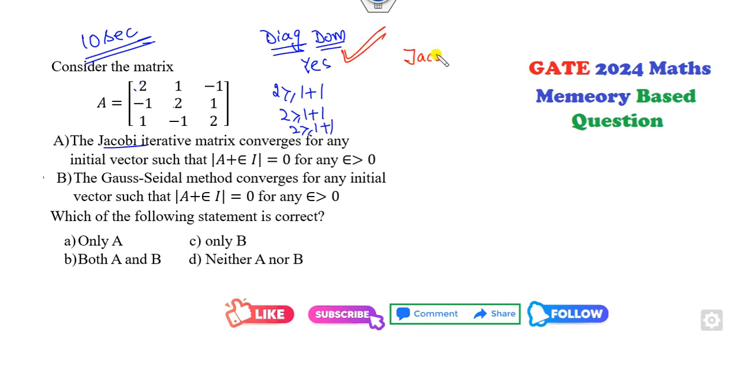Once it is diagonal dominant, then the Jacobi method as well as the Gauss-Seidel method always converge for any initial guess. So you can see that Jacobi iteration matrix converges for any initial guess. Yes, this is also convergent for both A and B are the correct options.